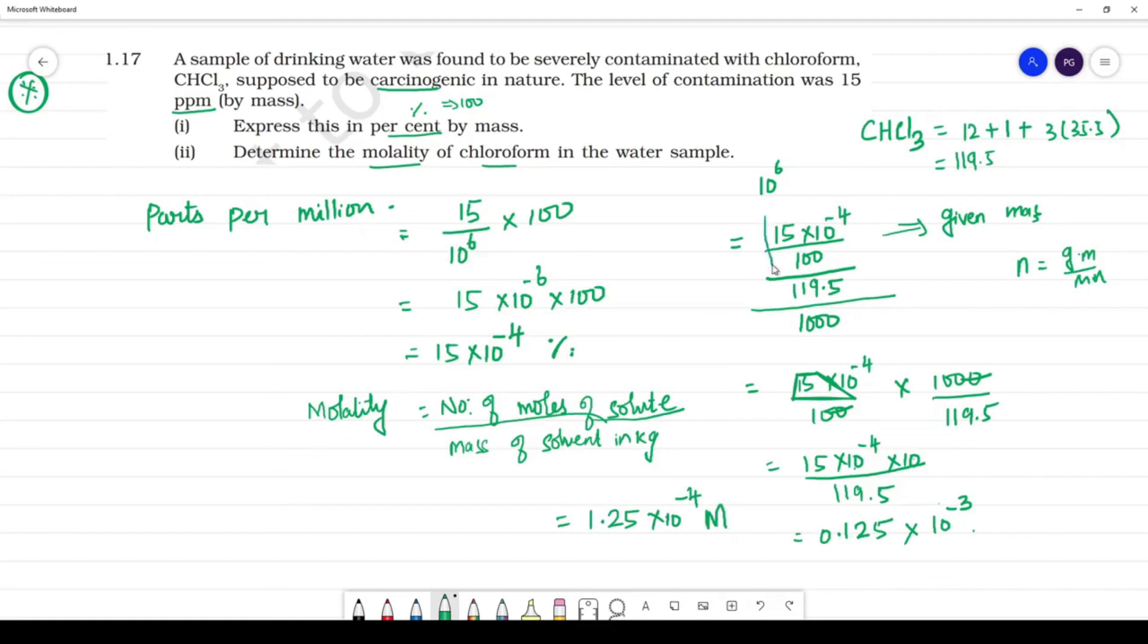Molality is number of moles per solute by solvent. This is number of moles calculated, number of moles by solvent in kg. That is 1,000 grams. So this gives us the answer.